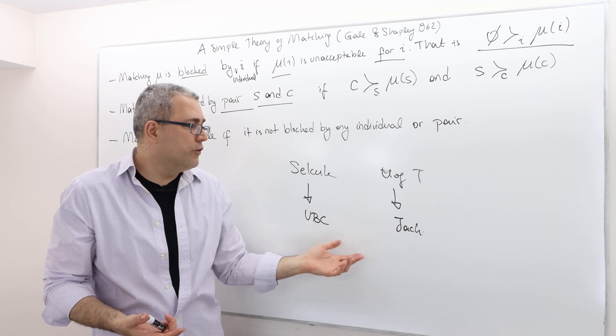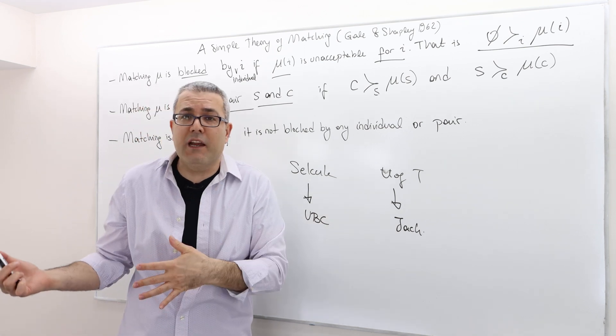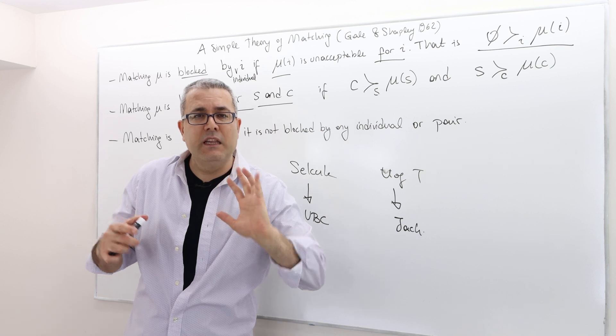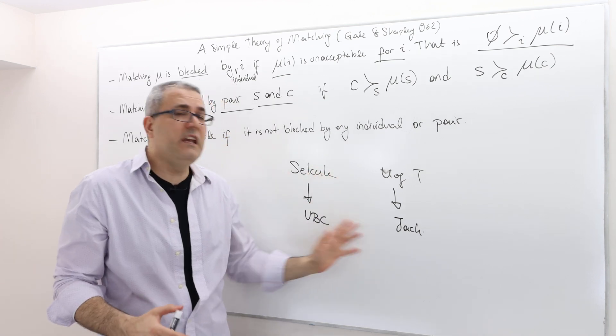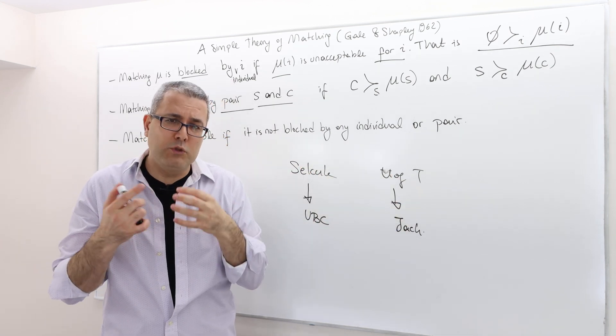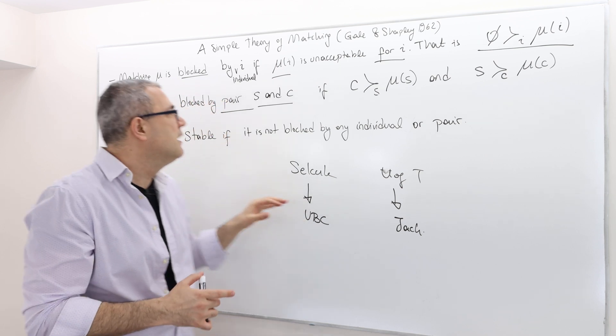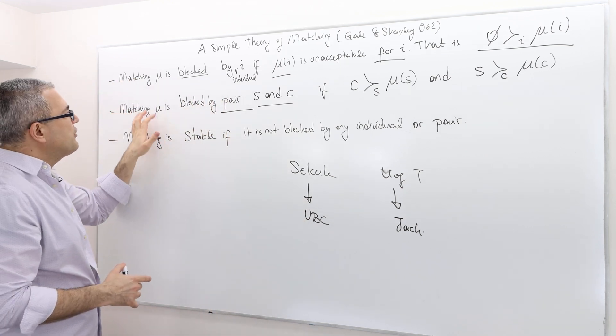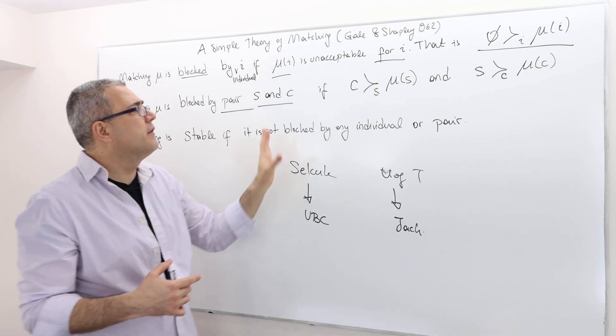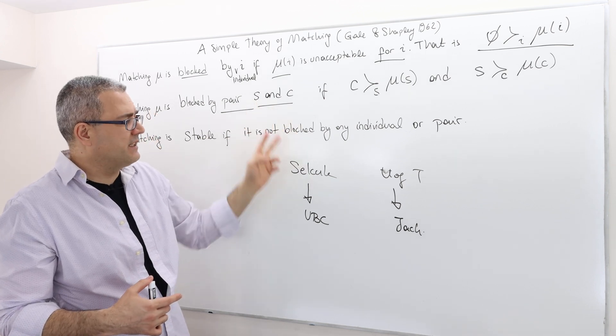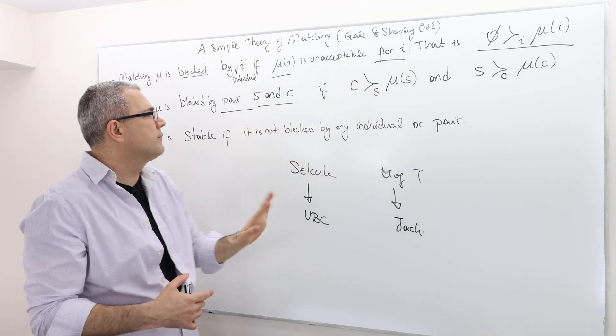What's going to happen to UBC and Jack? Well, we don't know, we don't care. But the thing is, we can basically leave the coalition or leave this match and form our own coalition. That's the idea. So a matching mu is blocked by a pair if there is a pair S and C which this is the case.